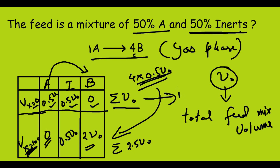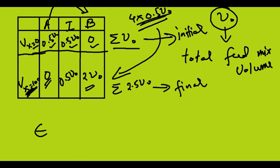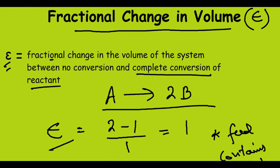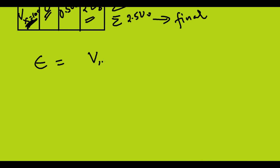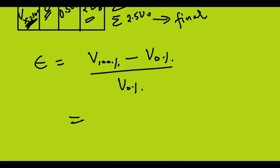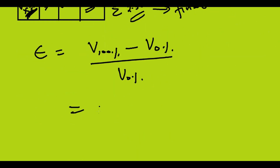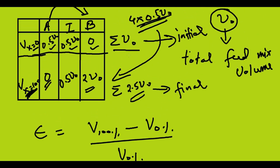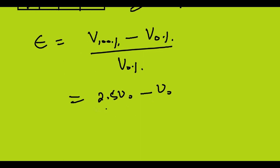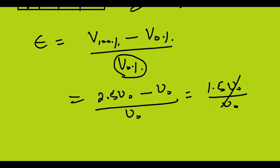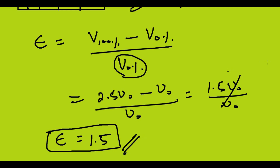The initial volume is V₀ and the final volume is 2.5V₀. Using the definition, epsilon equals volume at 100% conversion minus volume at 0% conversion, divided by volume at 0% conversion. So epsilon = (2.5V₀ - V₀) / V₀ = 1.5V₀ / V₀ = 1.5. The fractional change in volume for this case is 1.5.